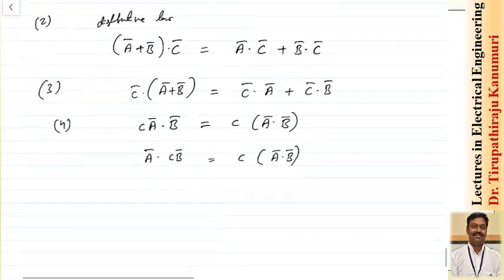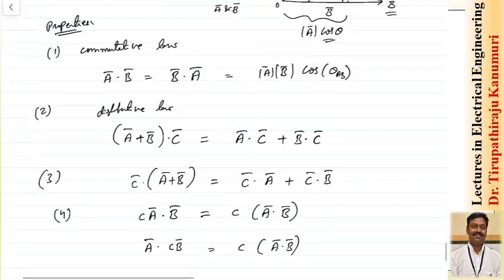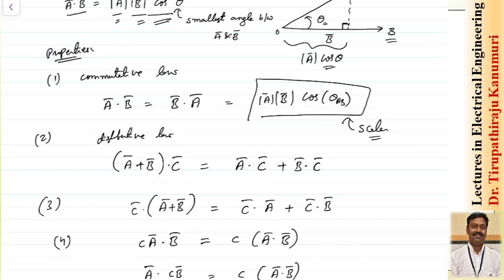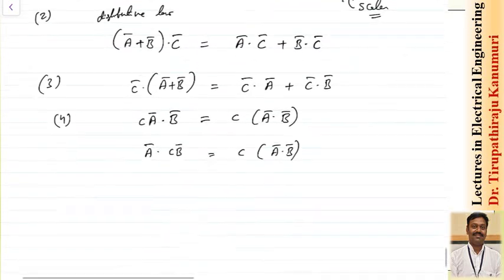Why is it called a scalar product? Because the result that comes due to the scalar product is a scalar. That is why it is also called as scalar product — because it is a product of two vectors which results in a scalar value.